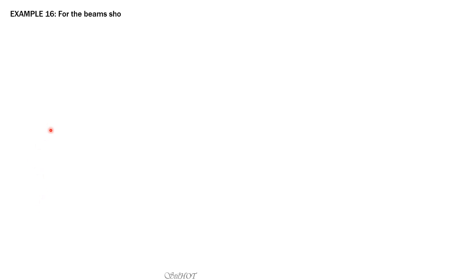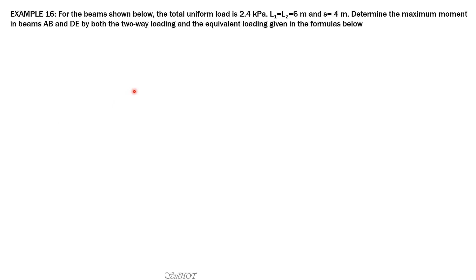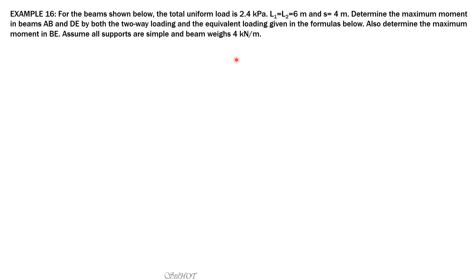Let us have Example 16. For the beams shown below, the total uniform load is 2.4 kPa — that's the pressure. L1 equals L2 equals 6 and the spacing S is 4 meters. Determine the maximum moment in beams AB and DE by both the two-way loading and the equivalent loading given in the formulas. Also determine the maximum moment in beam BE. Assume all supports are simple and the beam weighs 4 kN per meter.